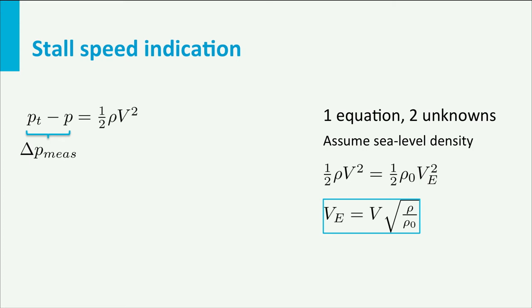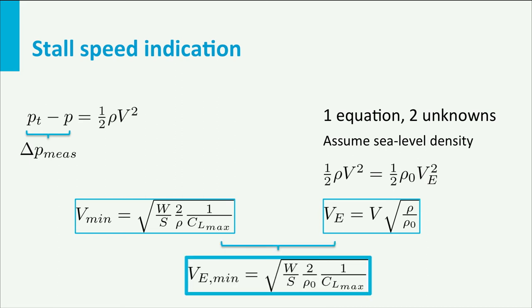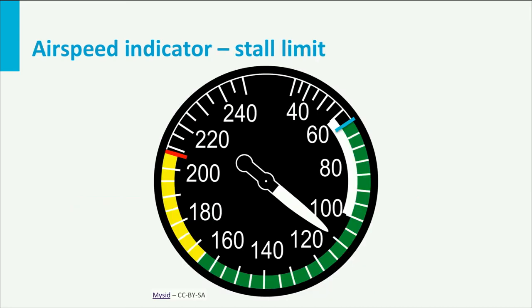But what does this mean for our limit, the minimum airspeed? The minimum airspeed equation gives the minimum true airspeed. If we would rewrite this to equivalent airspeed, then we would obtain the following. The minimum equivalent airspeed is a function of the sea level air density. So minimum equivalent airspeed is independent of altitude. This means that the limit on the dial always gives the correct stall speed, even though the absolute value in terms of true airspeed is incorrect.